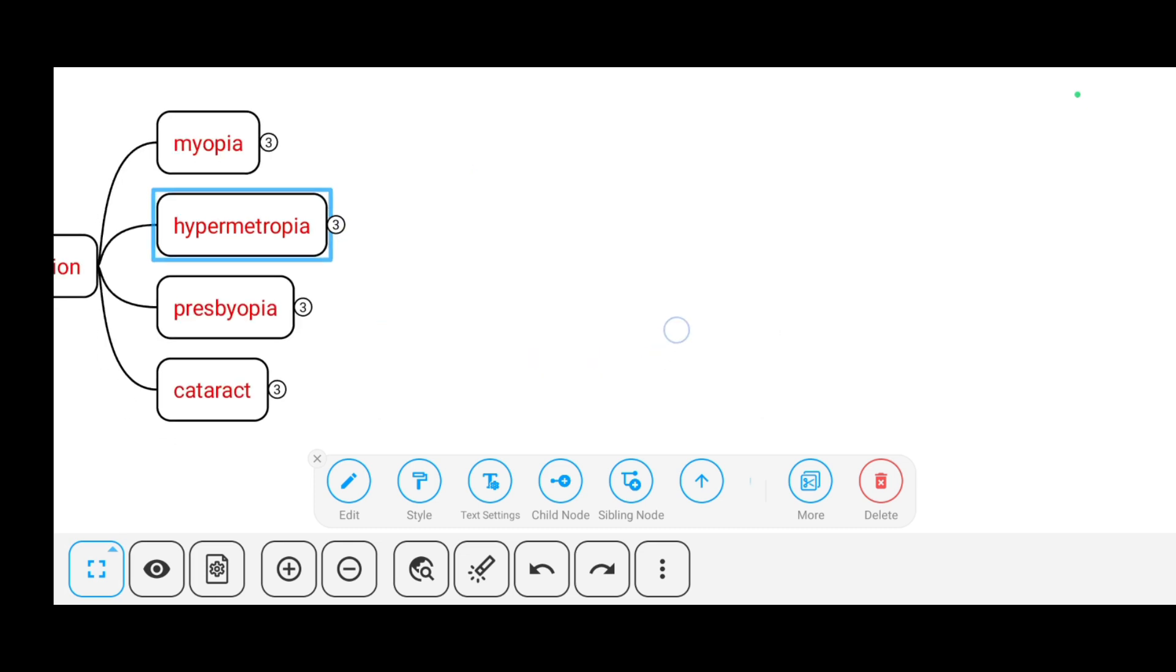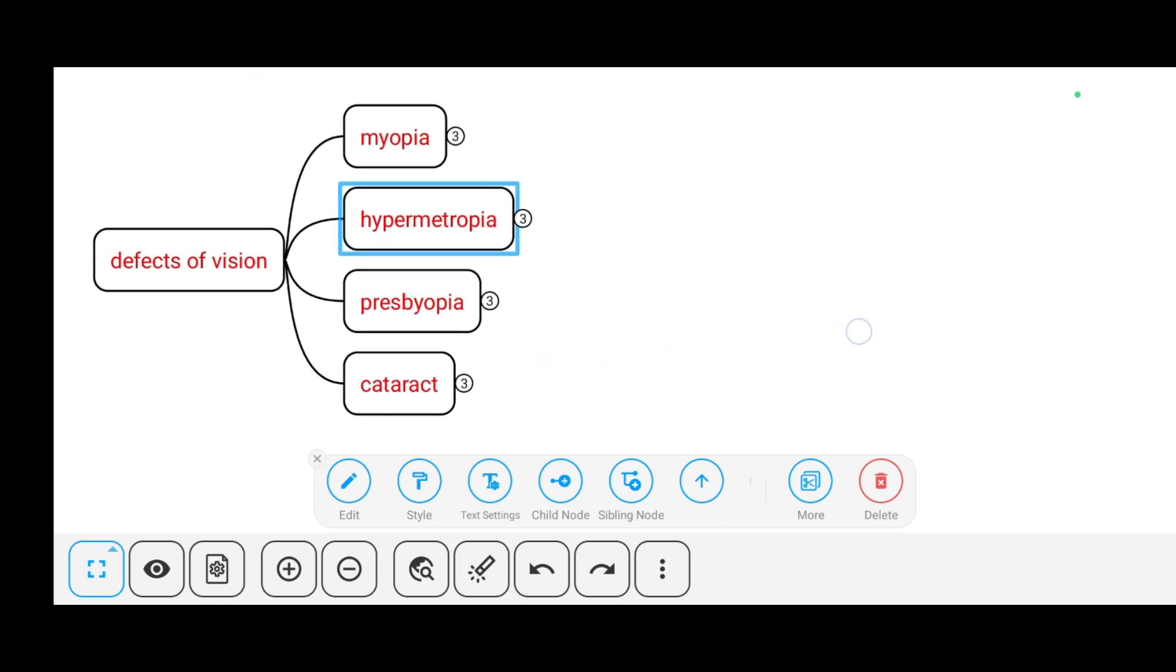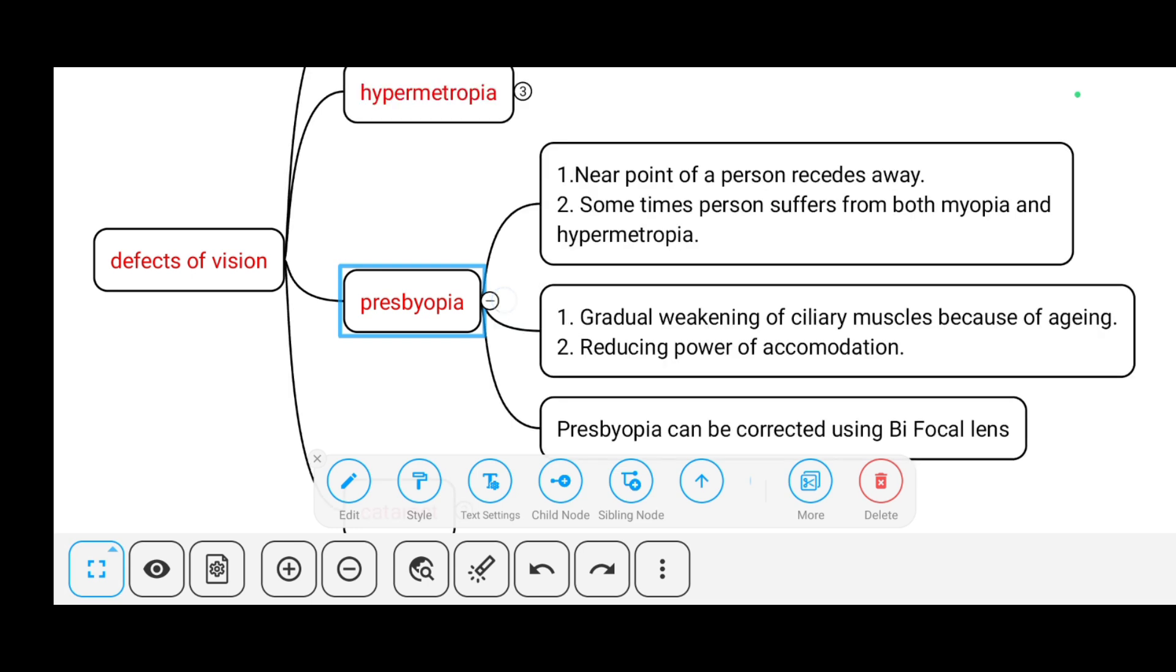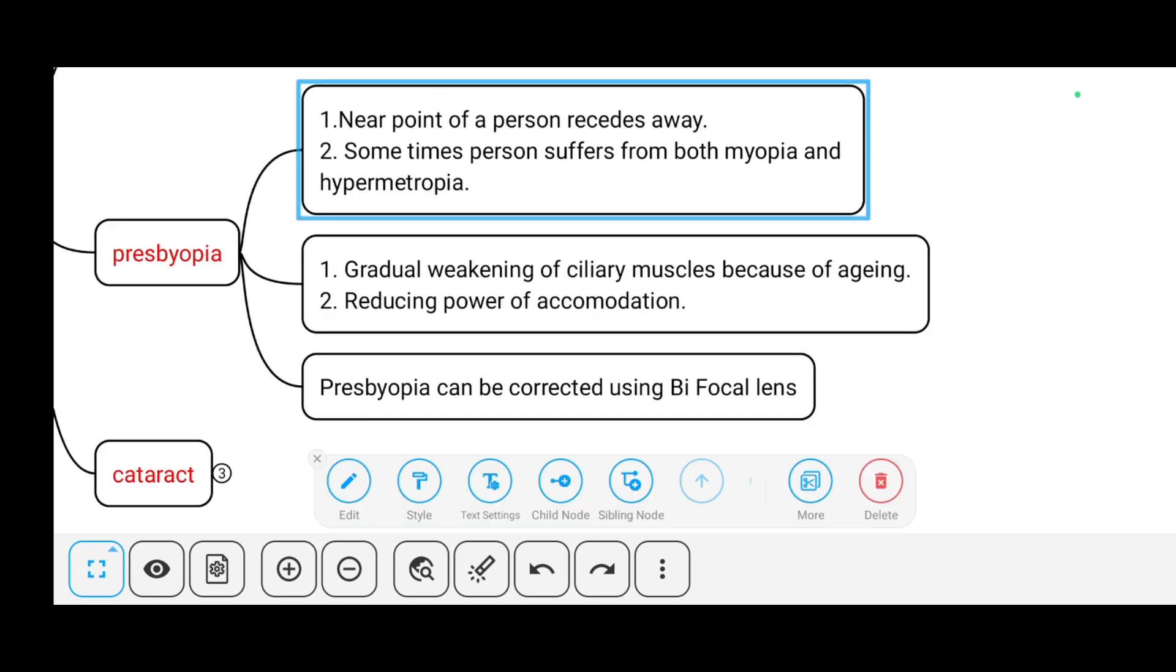Let us see the third defect of vision, which is presbyopia. What is presbyopia? For a presbyopic person, the near point recedes away. Sometimes the person suffers from both myopia and hypermetropia.